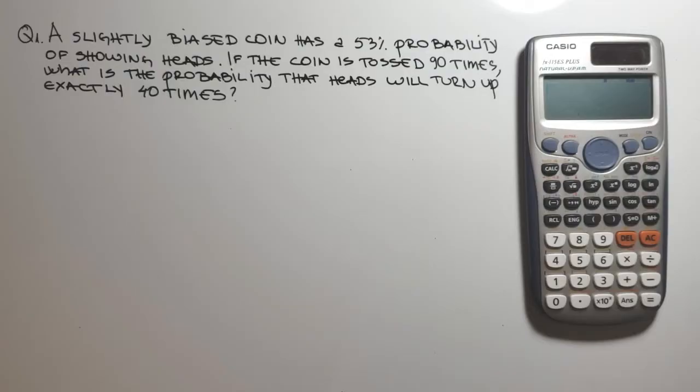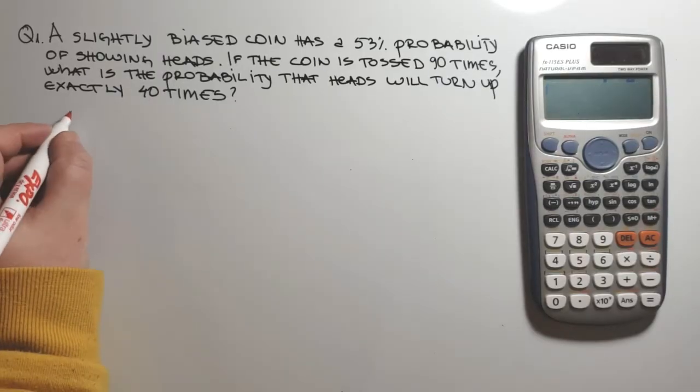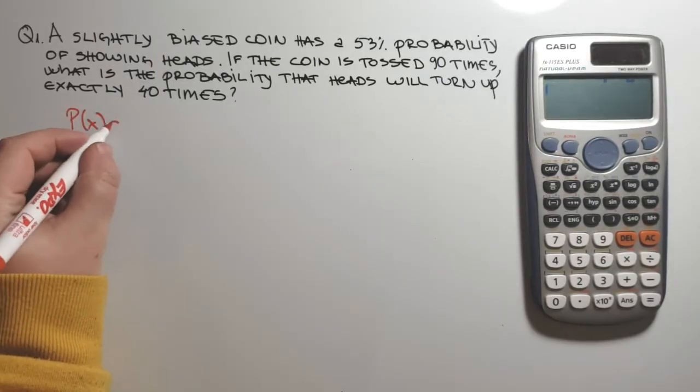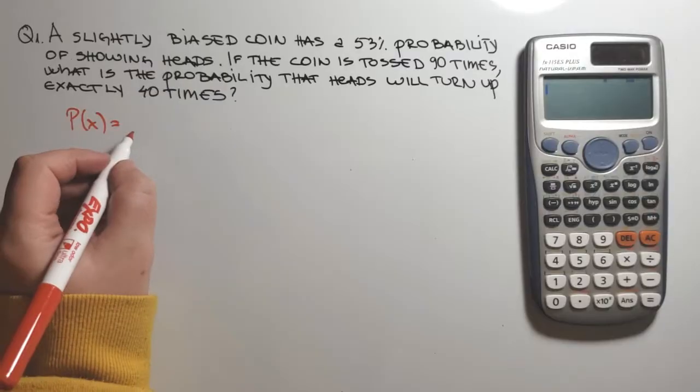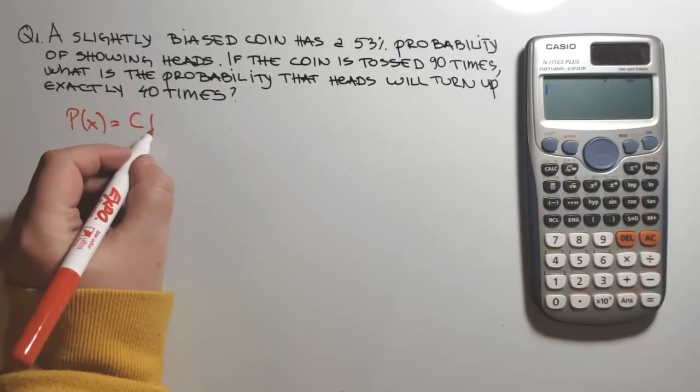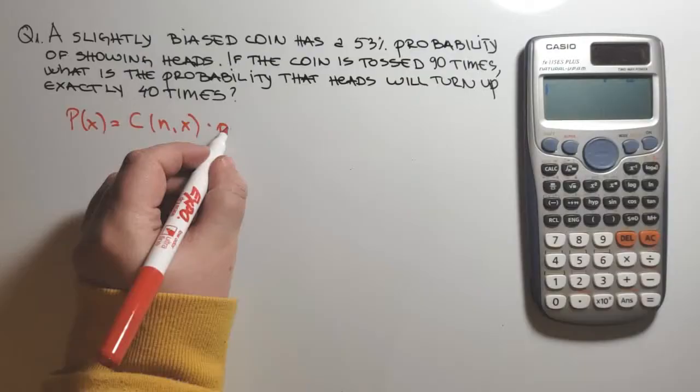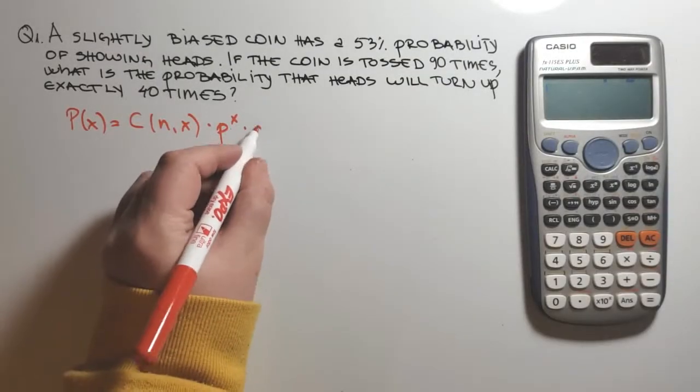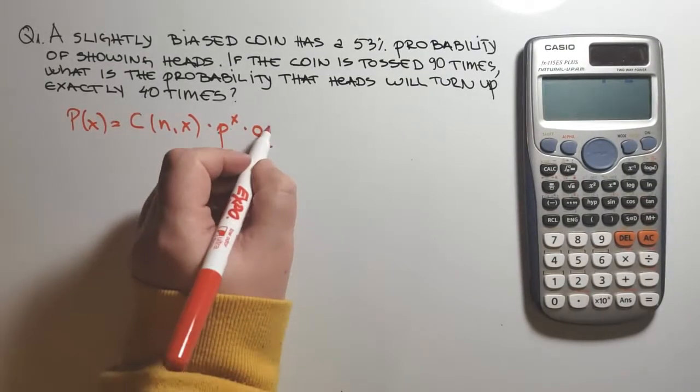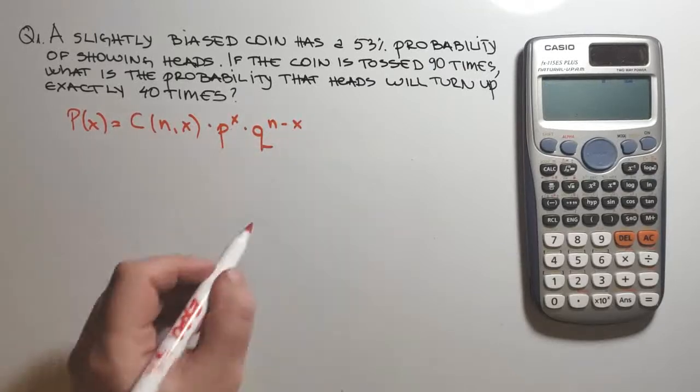First, let's define the parameters and explain a little bit about it. For binomial distribution, here is the formula. P of X equals to the combination formula NCX, that can be written in this way, times P raised to the power of X times Q raised to the power of N minus X.